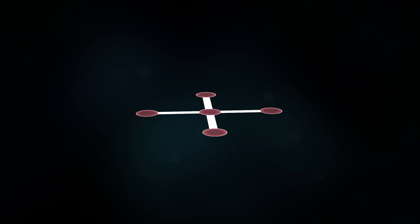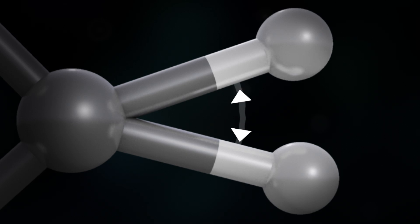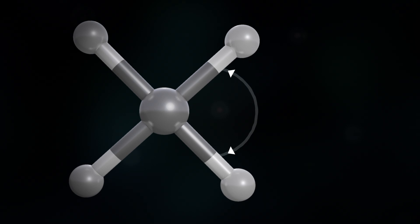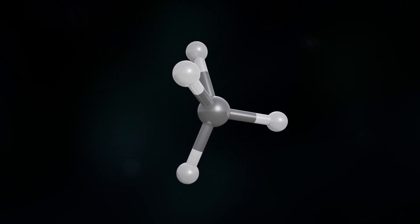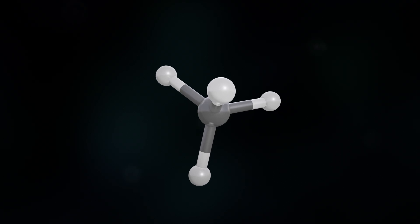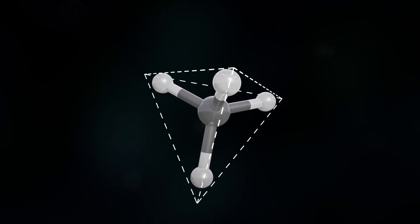But how would it look in three dimensions? We can reasonably say that because each of these bonds is a region of negative electric charge, and like charges repel each other, the most favorable configuration of atoms would maximize the distance between bonds. And to get all the bonds as far away from each other as possible, the optimal shape is this. This is called a tetrahedron.